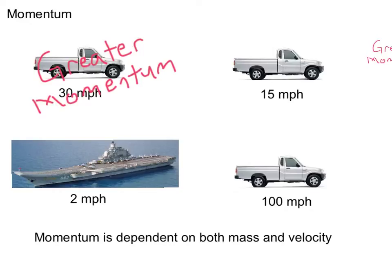What might be a little more difficult to identify is the fact that an aircraft carrier moving at a slow 2 miles per hour has way more momentum than our truck here, even if it's moving at 100 miles per hour. That's because momentum is dependent upon both mass and velocity.